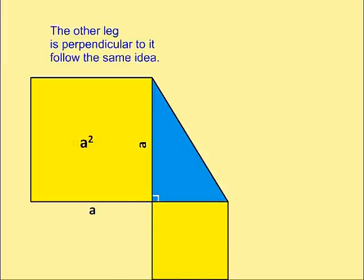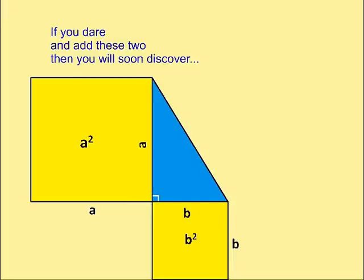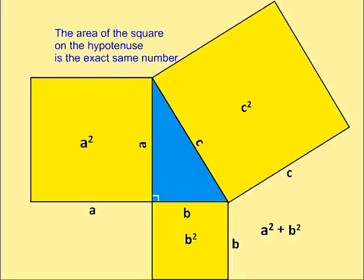The other leg is perpendicular to it, follow the same idea. If you dare and add these two, then you'll soon discover the area of the square on the hypotenuse is the exact same number.